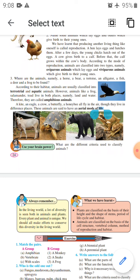Use your brain power: What are the different criteria used to classify animals? Yes, the criteria are aquatic animals, amphibians, terrestrial, and aerial. These are the different classifications of animals.